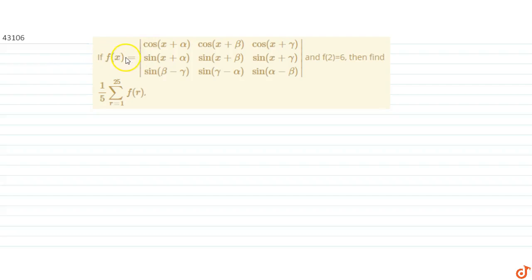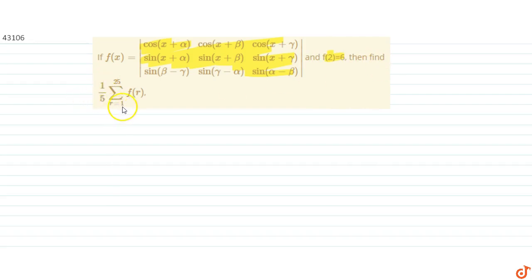In this question, we are given that f of x equals this determinant, and f of 2 equals 6. We have to find the value of (1/5) times the summation with r going from 1 to 25 of f of r. First of all, we will simplify f of x, so we will expand this matrix along row 3.